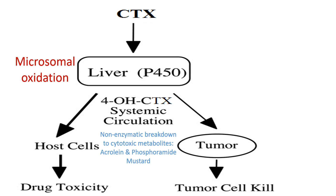The 4-hydroxy cyclophosphamide isomerizes into an aldehyde, then breaks apart into acrolein and phosphoramide mustard. Acrolein is a highly reactive cytotoxic molecule, and phosphoramide mustard is the active alkylating agent that will induce the cytotoxic effects — our main mechanism of action. Acrolein is also cytotoxic and highly reactive, which we'll see when we talk about side effects.